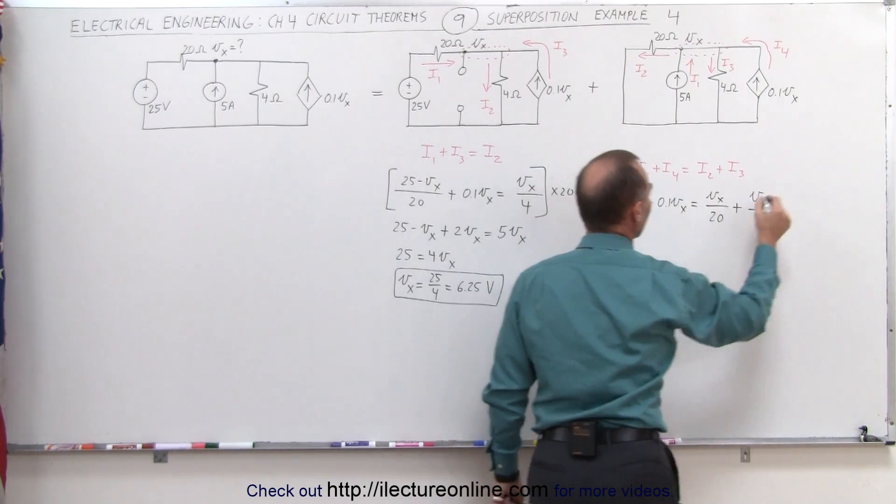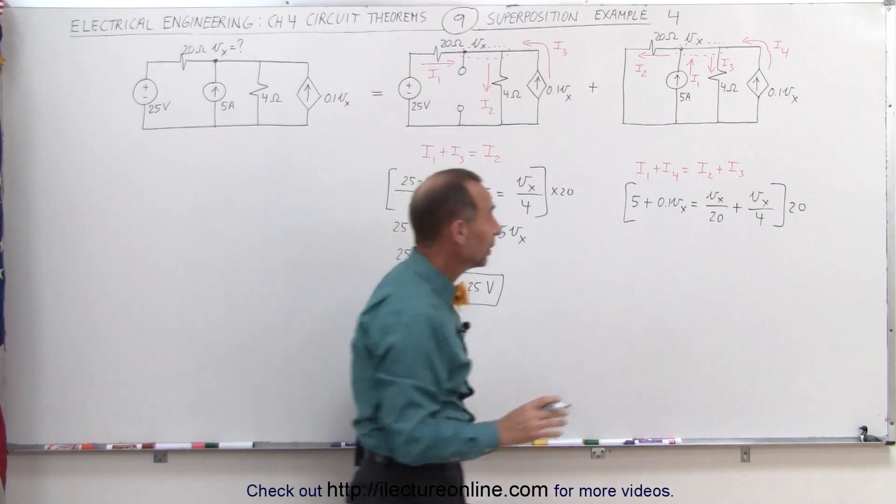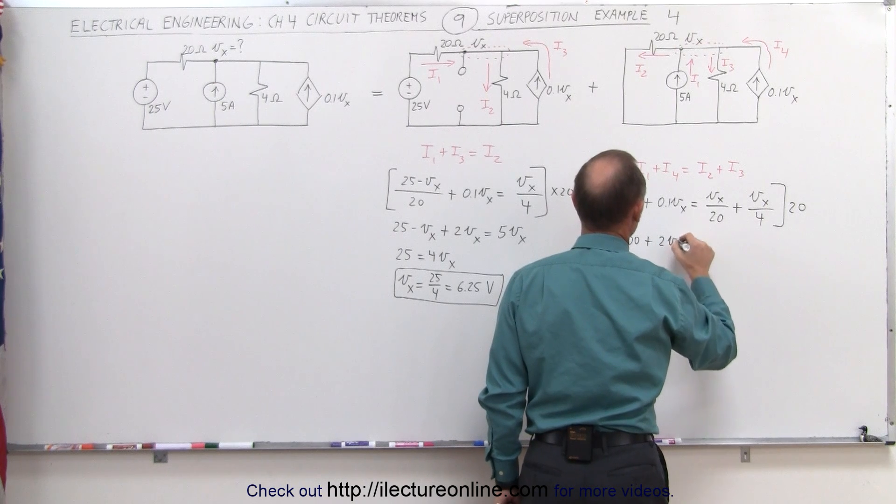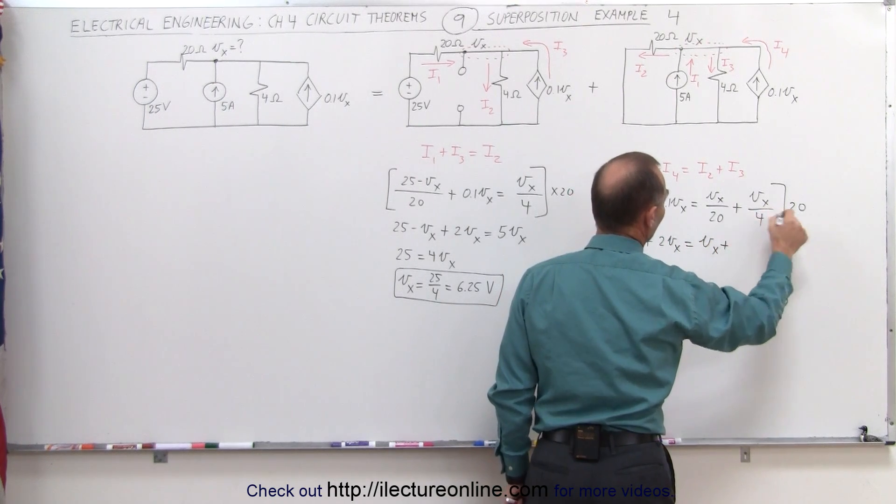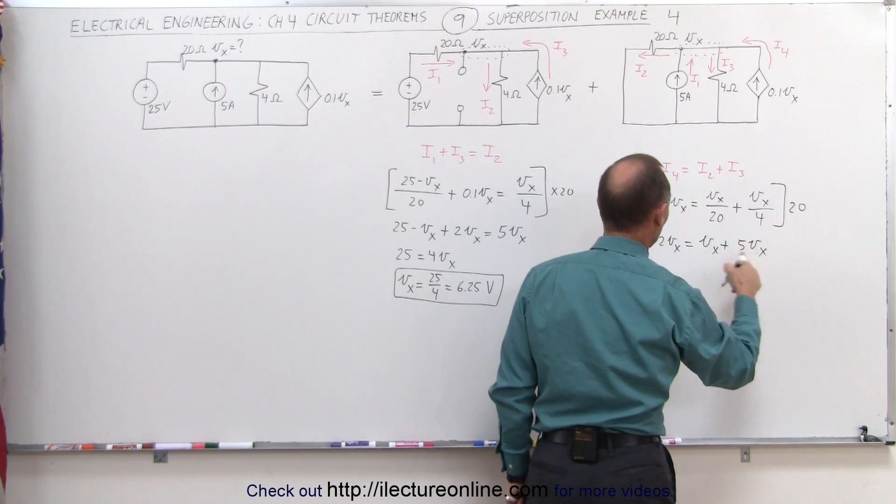Again, multiplying both sides of the equation by 20 to get rid of the denominators, and we get the following. 20 times 5 is 100, plus 20 times this is 2 V sub X equals V sub X plus, 4 goes on 25 times, 5 V sub X. Moving everything over to one side.